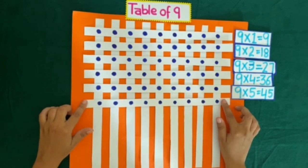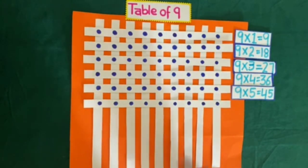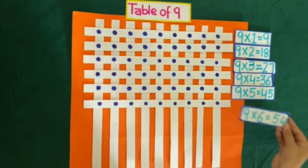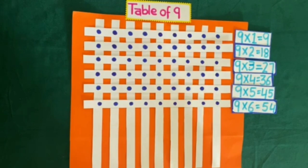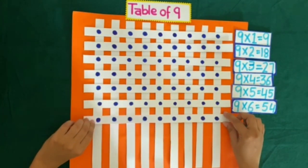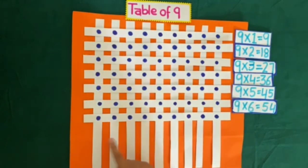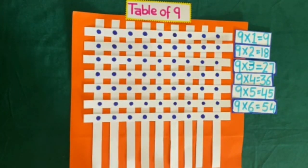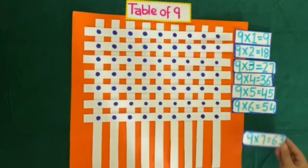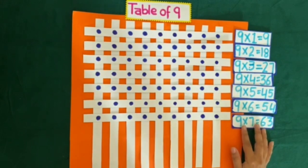Now if I place another strip, it also has 9 intersection points. So 45 plus 9 is equal to 54, which means 9 sixes are 54. Now another horizontal strip. It also has 9 intersection points. So 54 plus 9 is equal to 63. So 9 sevens are 63.